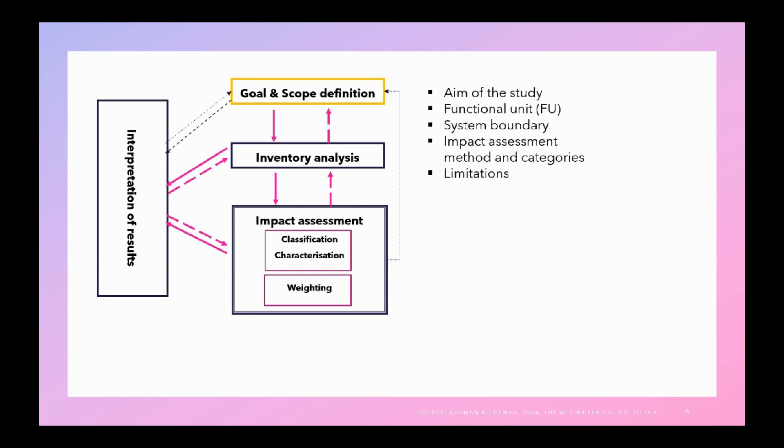Here first, the goal and scope definition. In a nutshell, as I said before, you need to define the aim of the study, functional unit, system boundary, impact categories, methods of impact assessment, and the limitations of the study to be very precise about what you want to do. The most important part here is to define your functional unit. Your functional unit should represent the system function.